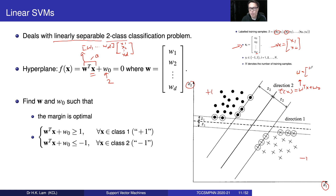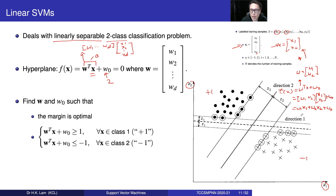In two-dimensional space, w only has two elements because the number of inputs is x1 and x2. So we have w1 and w2. Multiplying them out: w1, w2 transpose times x1, x2, plus w0. It will become w1·x1 plus w2·x2 plus w0. In total we have three variables to determine: w1, w2, and w0. Once we find these w's, we can define where to draw this line — where to draw this hyperplane.